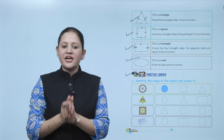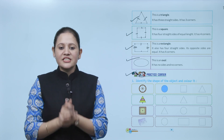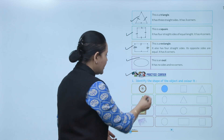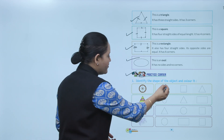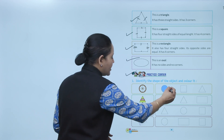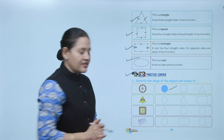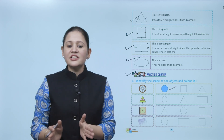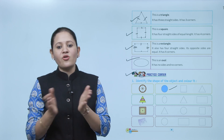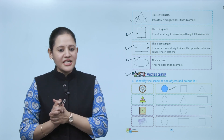Practice: identify the shape of the object and color it. First is a wheel — a wheel is of circle shape, so we'll color the circle like this. First you have to identify the object and accordingly color the shape.